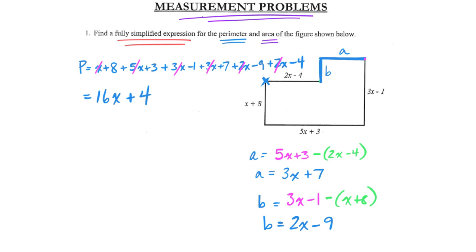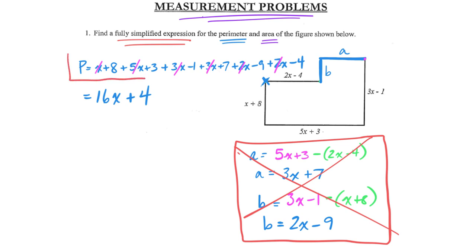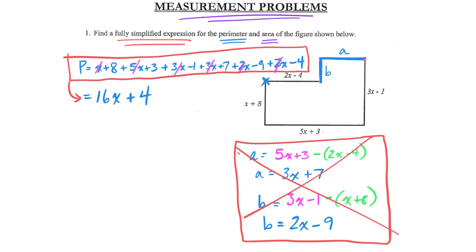Now, I think that was the slow and methodical way to tackle this problem, but I don't think it's the best way. You had to go through and find those missing dimensions — that was some extra work. If I could avoid that, I would. Also, look at the length of that expression I created — there are a lot of terms, so simplifying it creates real risk for a collecting mistake. If I could shrink down that expression, that would be a lot easier with less risk.